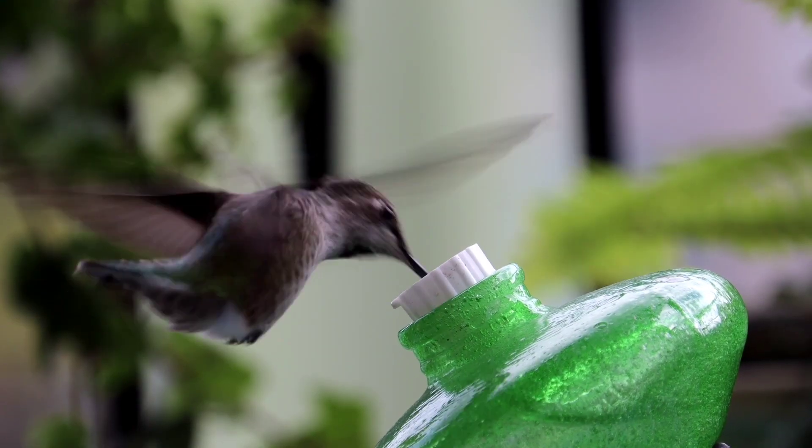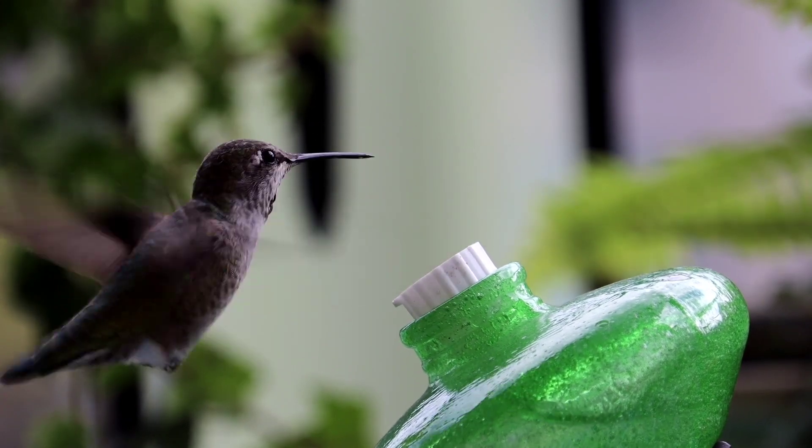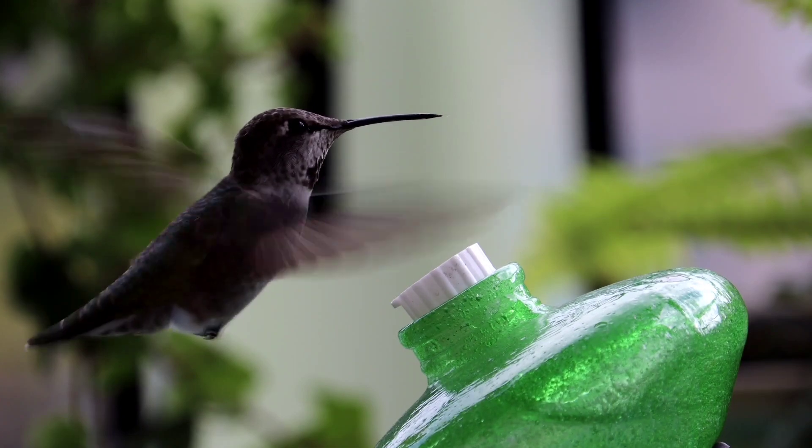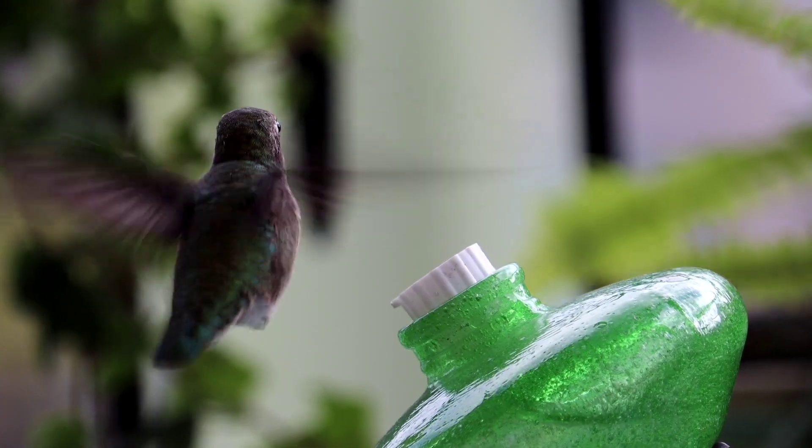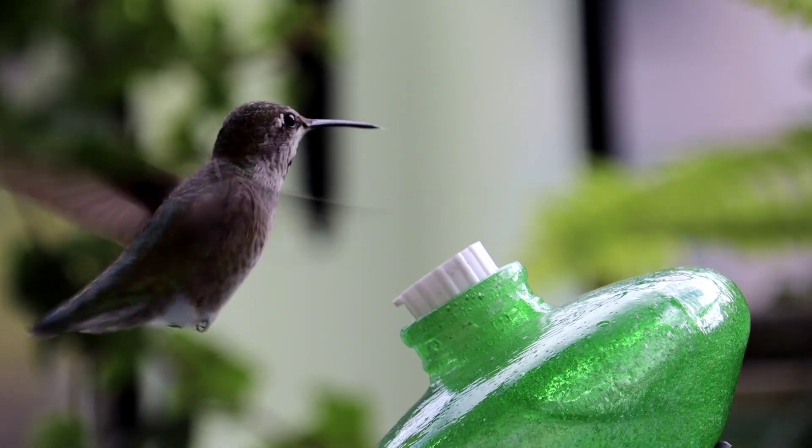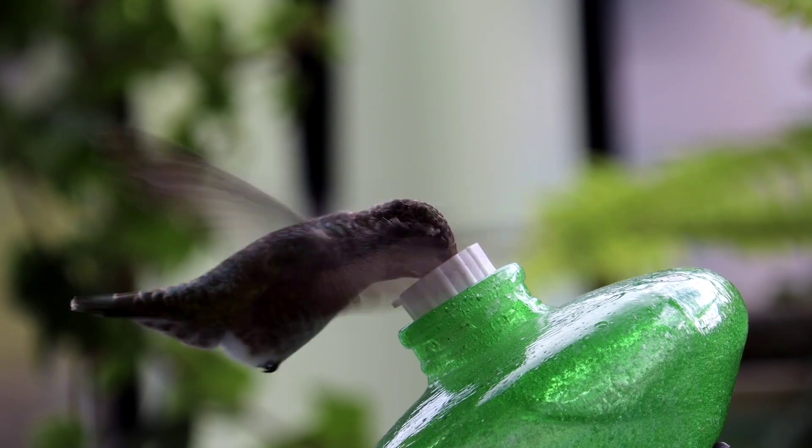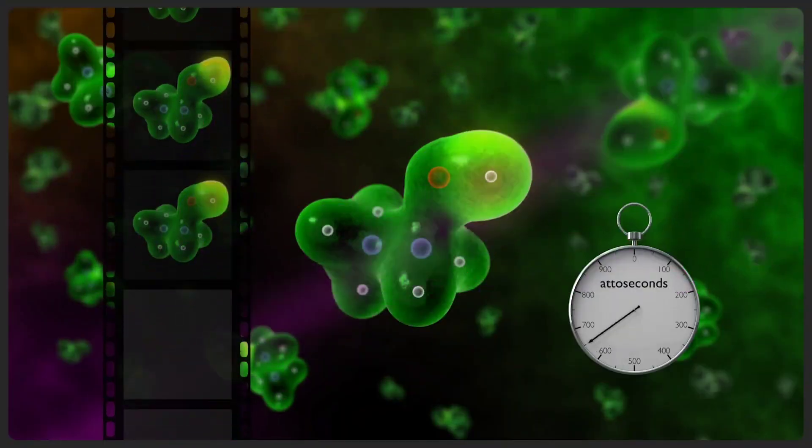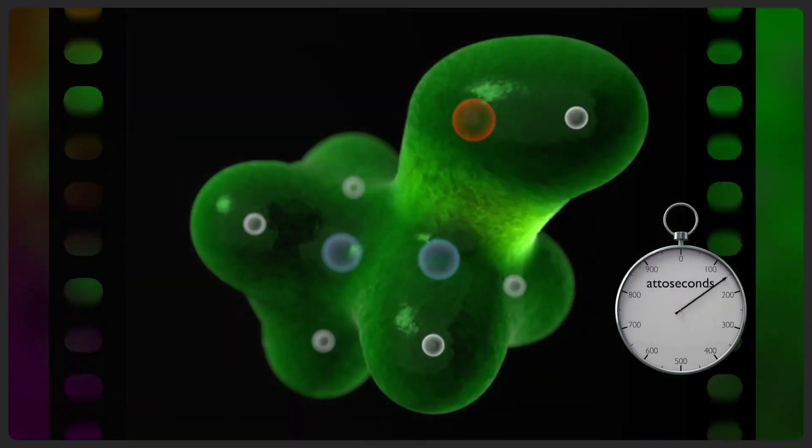The hummingbird's 80-fold wingbeat is difficult to observe due to the blurred movement. To capture these brief moments, technological tricks like high-speed photography and strobe lighting are used. This year's laureates demonstrated a method for producing brief light pulses that capture images of processes inside atoms and molecules.